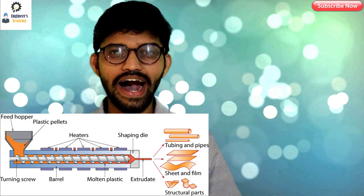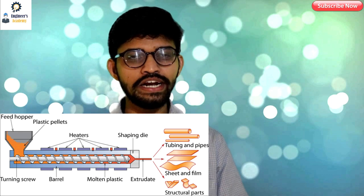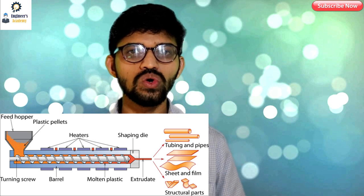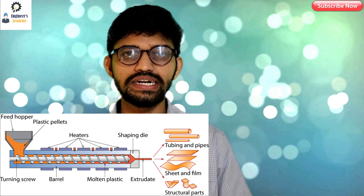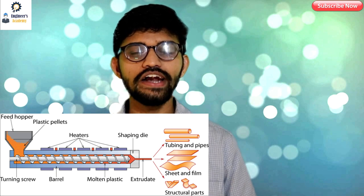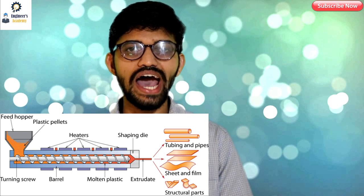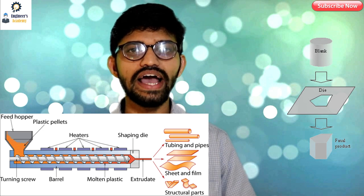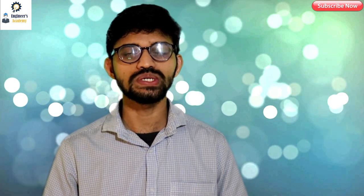Extrusion is a high volume manufacturing process in which granules of plastic are fed into a cylinder having a rotating screw. That plastic gets heated from an external source, gradually melts, and is then pressed against a die which has a suitable opening of the desired shape. The molten plastic is forced against the die and comes out having the exact cross-section shape of that die. This is basically the extrusion process — the material gets extruded through a die of desired shape or opening.